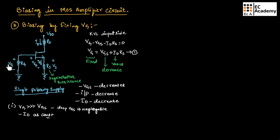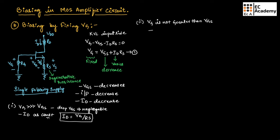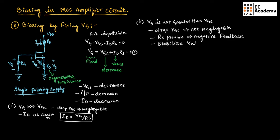If we take VG as very much greater than VGS, then the drop across VGS is negligible, and we can maintain ID as constant even when temperature is varying. From equation 1, since VG >> VGS, we can neglect VGS and write the drain current as ID = VG / RS. If VG is not much greater than VGS, then the drop across VGS is not negligible, and RS will provide the required negative feedback to stabilize ID.